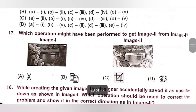Question 17: Which operation might have been performed to get image 2 from image 1? The step is to select the picture, right-click the mouse, and choose Invert Color. A is cut, B is paste, C is crop, D is invert color. Option D is the correct answer.